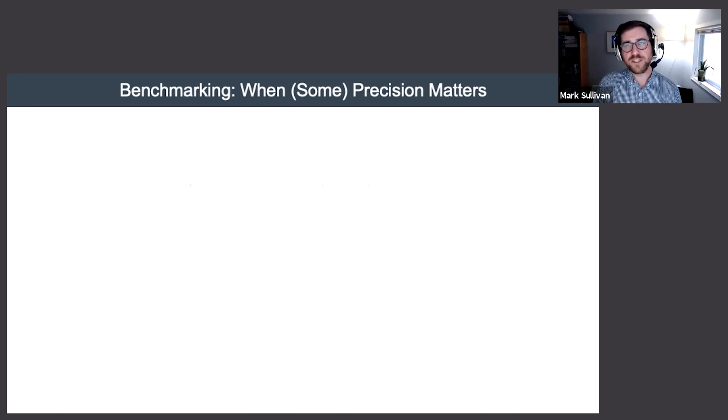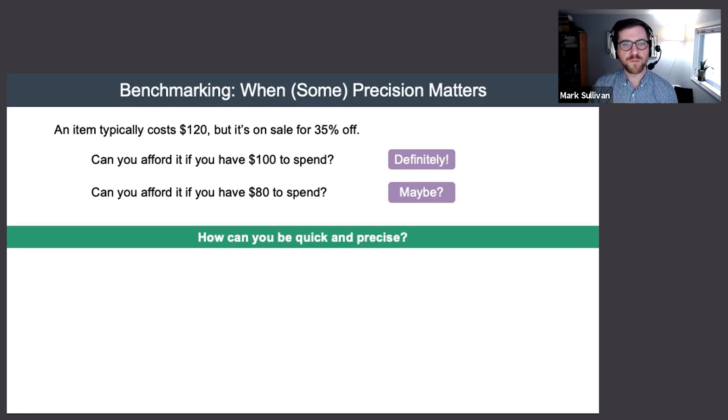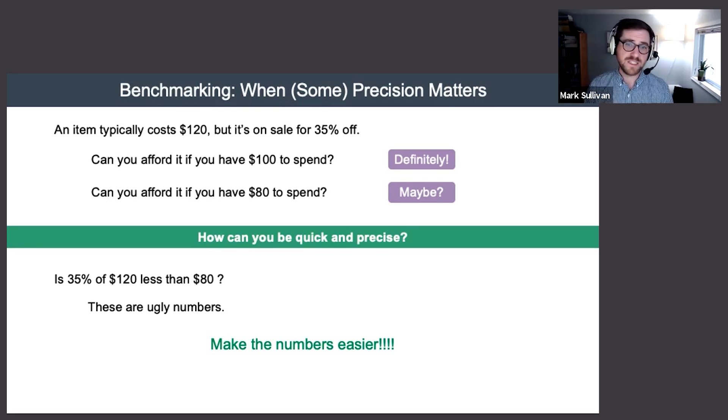I would always rather do three easy computations than one very difficult one. I'm going to be less likely to make a mistake, and the three easy computations are probably simpler than doing the one difficult computation. So when might we need to do this kind of benchmarking? Well, we could use it as part of an estimation plan, but we could also use it when precision matters. Consider another real world situation: say an item typically costs $120, but it's on sale for 35% off. You look at the money in your pocket and you want to know, do I have enough to buy it? Some cases will be clear cut - if you have $100, you're good to go. What if you have 80? Seems a little more borderline there. Is 80 going to be enough? Maybe. We need a little more precision here.